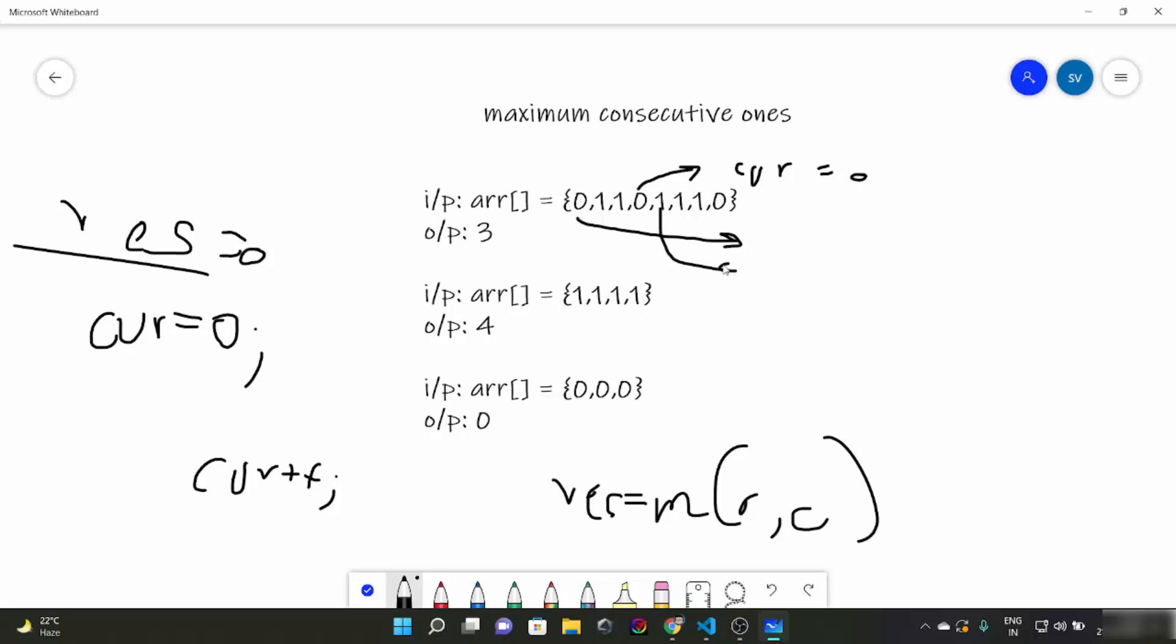Now we will come here, we found a 1, our curr becomes 1. Now we check res equals max of 2 and 1 which is 2, so res is still 2. We will come here, this will become 2. Res will become max of 2 and 2 which is 2. Now curr will become 3, now res would become 3. Now we would come here so our curr would become 0 and that's it. So this was the efficient approach.